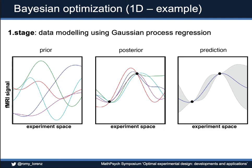It starts with selecting a kernel — in this case, we used a squared exponential kernel. This assumes that task conditions that are next to each other in the space elicit a similar brain response. This is our prior: all the possible covariance functions we would expect before we even start the experiment. Once we collect some data, shown as black dots, the space of possible covariance functions shrinks as we fit our Gaussian process. We get not just the mean activation in blue, but also the prediction of the uncertainty.